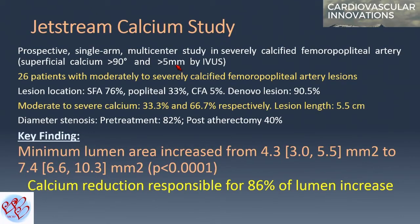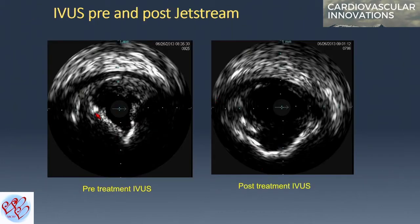Looking at the JetStream Calcium study in severe and moderate calcified, short lesions: the minimal luminal area after JetStream increased from 4.3 mm² to 7.4 mm². More importantly, calcium reduction was responsible for 86% of the lumen increase. A typical IVUS example shows how the MLA increased very significantly, demonstrating good, effective debulking.